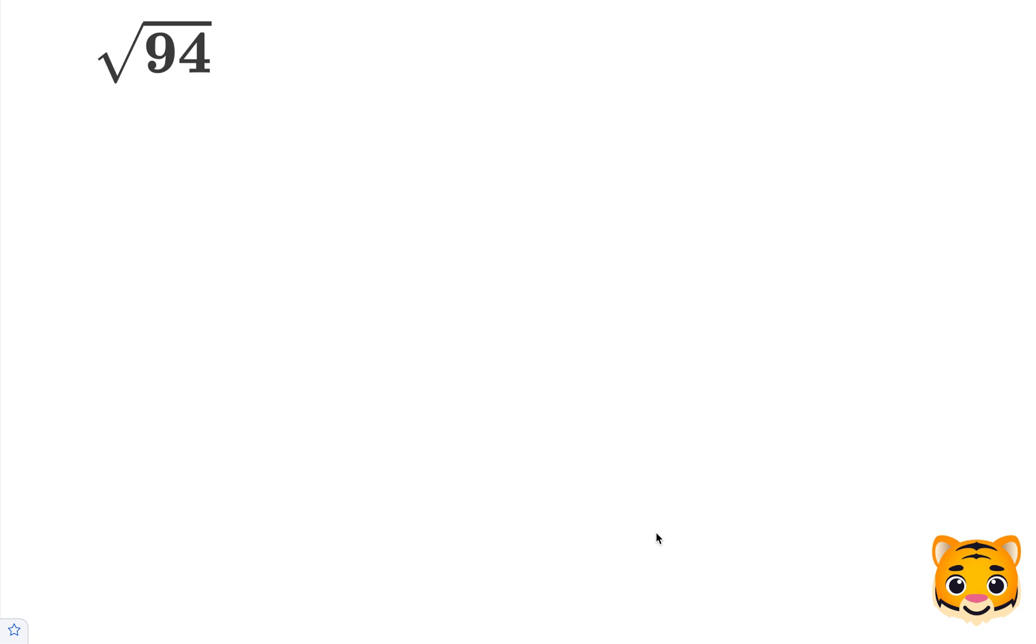In this example, we will be approximating the square root of 94 to the nearest tenths place decimal. To do this, we need to look at perfect squares nearby to 94.